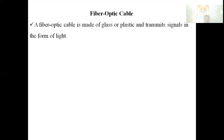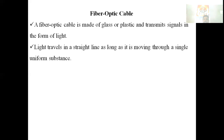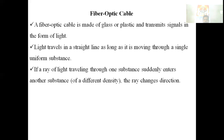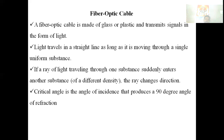A fiber optic cable is made of glass or plastic and transmits signals in the form of light. Light travels in a straight line as long as it is moving through a single uniform substance. If a ray of light enters another substance, it changes direction. The critical angle is the angle of incidence that produces a 90-degree angle of refraction.